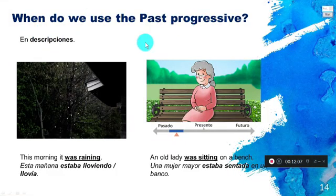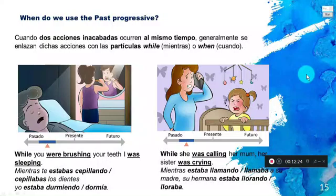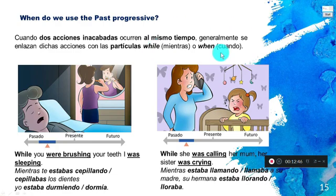We also use the past progressive for descriptions — to describe a situation that was occurring in the past. For example: 'This morning it was raining' or 'An old lady was sitting on the bench.' We also use it for two actions happening at the same time, connected with 'while.'